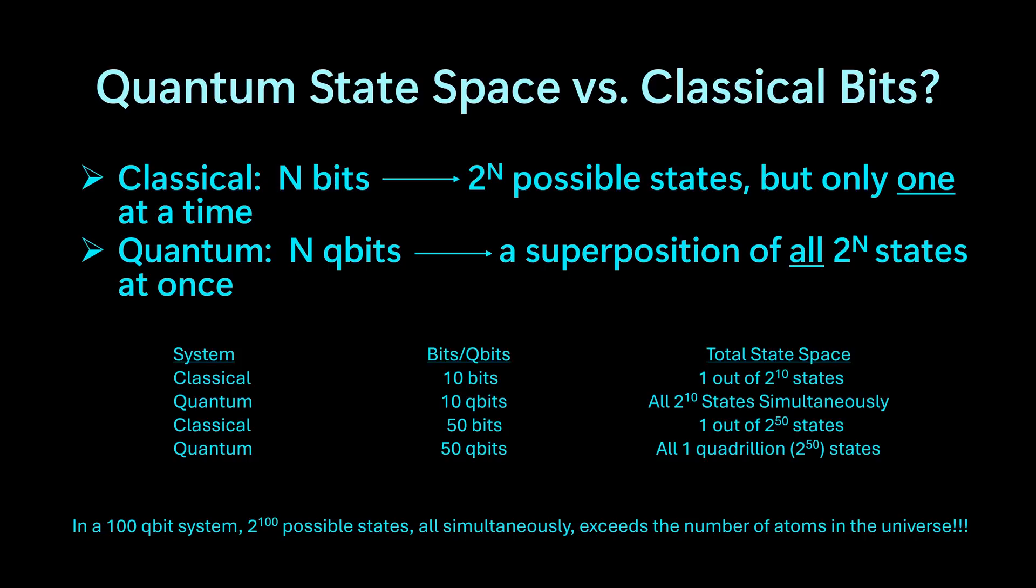Now, not all these states are equally useful, but interference guides the algorithm toward the correct solution. The processing power of quantum systems is enormous. It's important to understand that superposition and entanglement are not a creation of human beings or algorithms. They are intrinsic, inherent properties of subatomic particles.